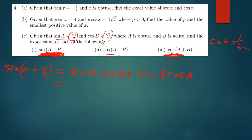Substituting the known values: sin a is root 3 over 2 and cos b is root 3 over 2. However, we still need sin b and cos a, which aren't directly given, so we need to derive them from the triangles.